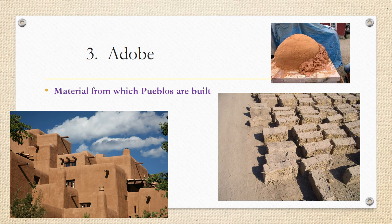Number three is adobe. What is adobe? It's a material from which pueblos are built. Remember, pueblo is a word that can mean a house or the actual tribe, the Pueblo Native Americans. You can see that orangish clay — a kind of mud that would be packed together — and then the picture of all the bricks being baked in the sun. This is adobe, and they'd be put together to create those Pueblo homes.